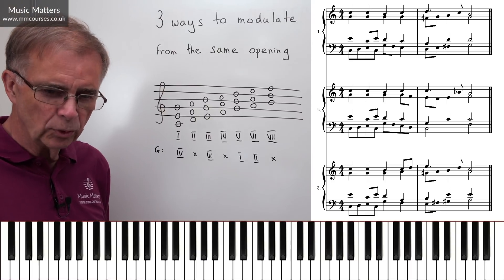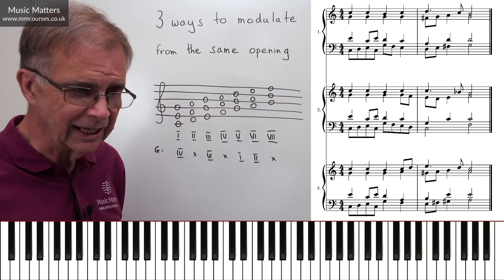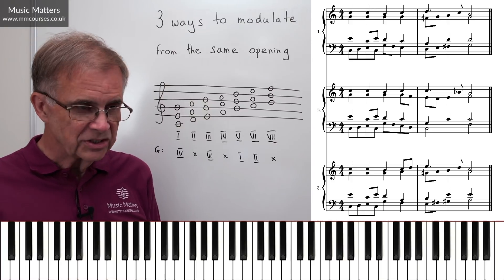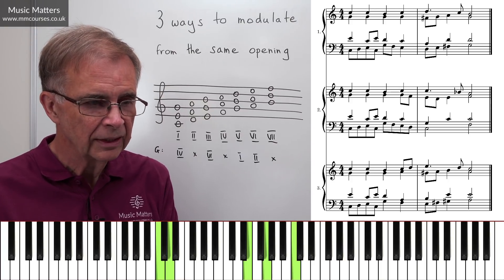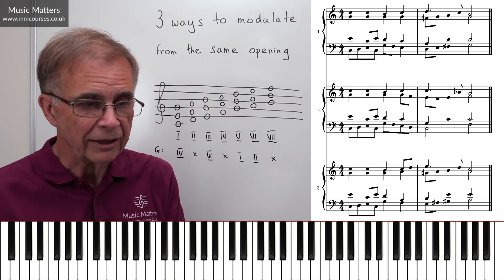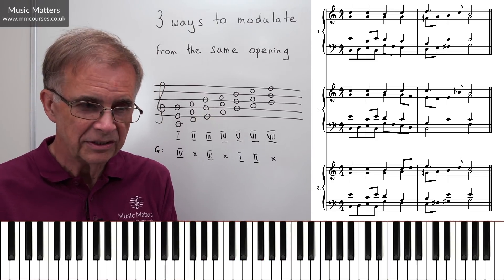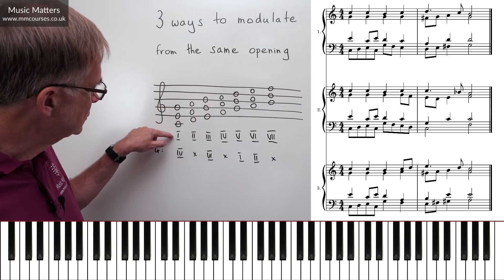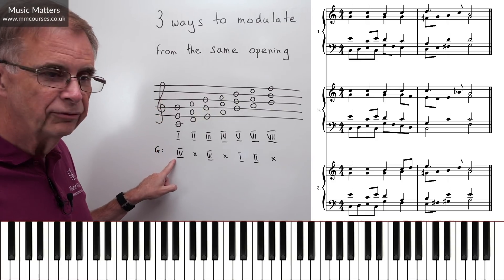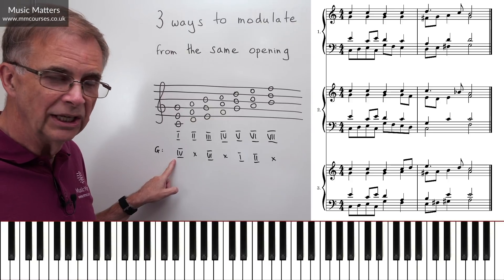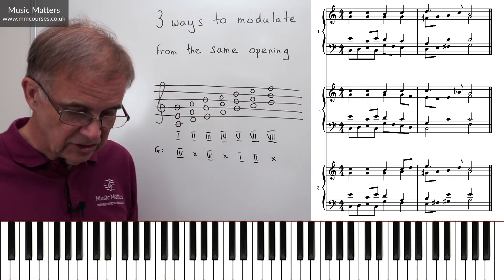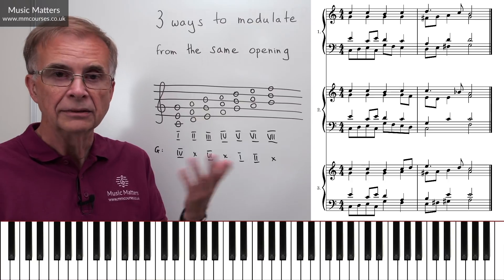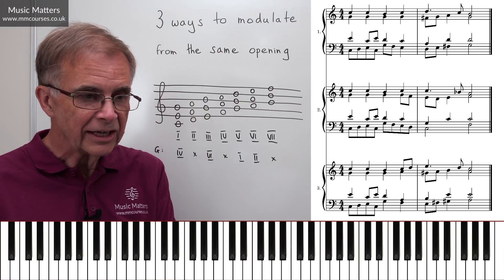Looking at example one, the pivot chord is on the fourth beat of the first bar. We start in C major with chord I, chord IB going back to I, then chord V, and then we come to this chord. That chord — the fourth beat of bar one — is a C major chord, chord I, but it's also chord IV in G major, the new key. In first inversion, it's IVB in the new key or IB in the old key.